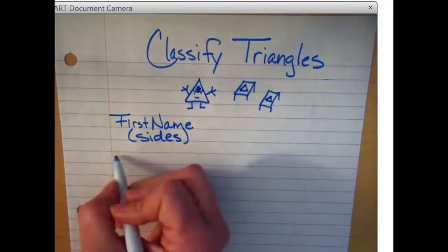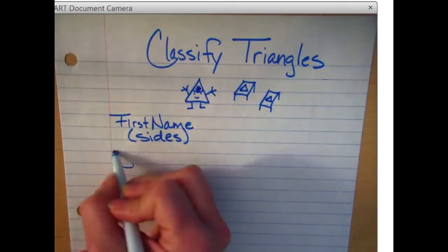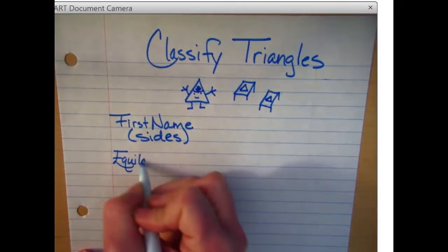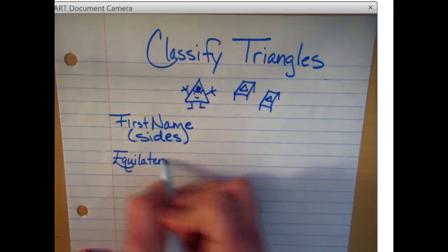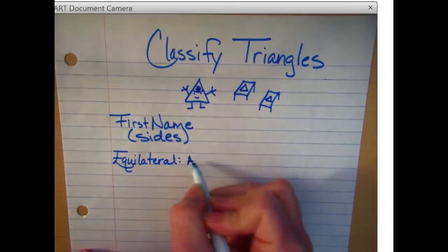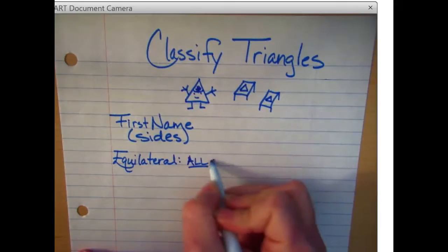When the baby triangle has sides that are all equal, his name is equilateral. He's given that name when all the sides are equal.